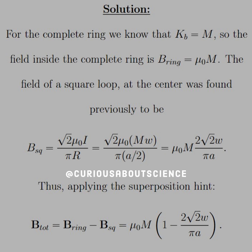B squared was equal to square root of 2 mu not I over pi R. Okay, but I, we have, is equal to the current is equal to MW, the little gap, and then R is equal to A divided by 2 in this case, since the length of the square is A divided by 2. Let that sift through, and then we end up with mu not M to square root 2 W over pi A.